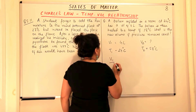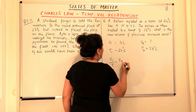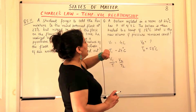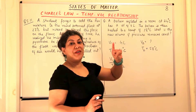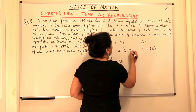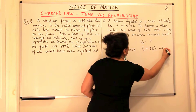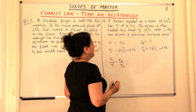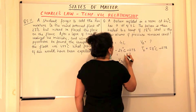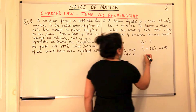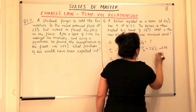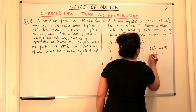We know V1 upon T1 is equal to V2 upon T2. But before I do this, let me remind you that for Charles Law the temperature should be in the Kelvin scale — the absolute temperature. So I'll add 273 to the Celsius temperatures. 24 plus 273 gives 297 Kelvin for T1, and 58 plus 273 gives 331 Kelvin for T2.